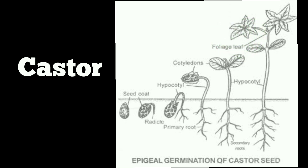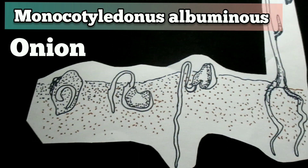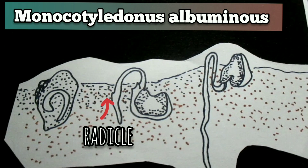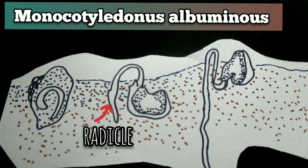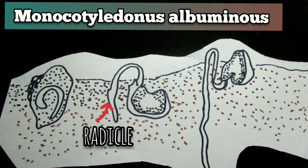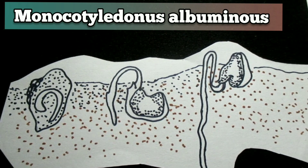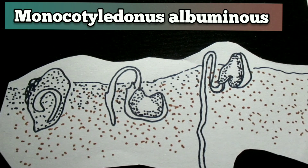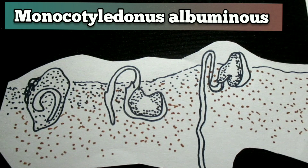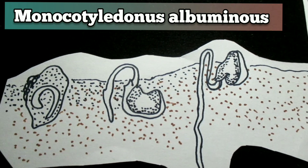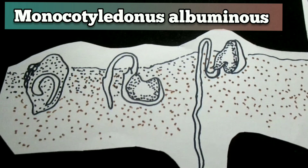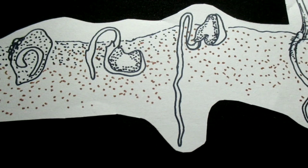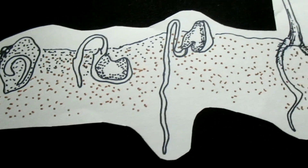Epigenous germination is very rare among the monocots. Onion is one of the very few examples. In this case, the radicle as well as the base of the curved cotyledon grows out of the seed. The radicle penetrates the soil while the other end of the cotyledon remains within the endosperm and sucks the food material. The base of the cotyledon grows further, turns green, and pushes the seed out of the soil. The plumule is not visible so long as it is covered by the base of the cotyledon in the form of a sheath just above the radicle.